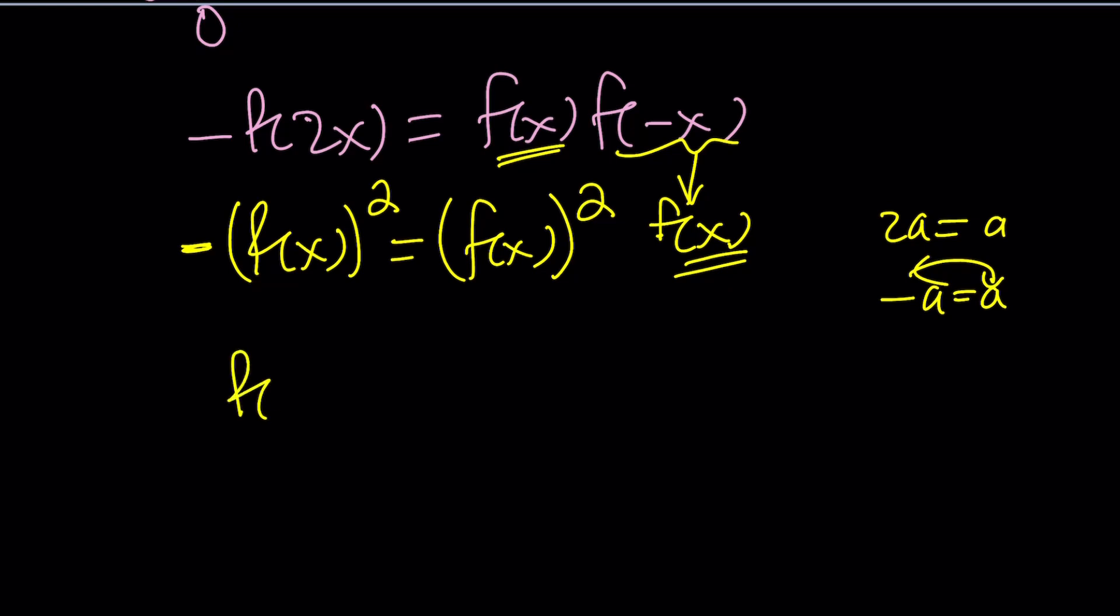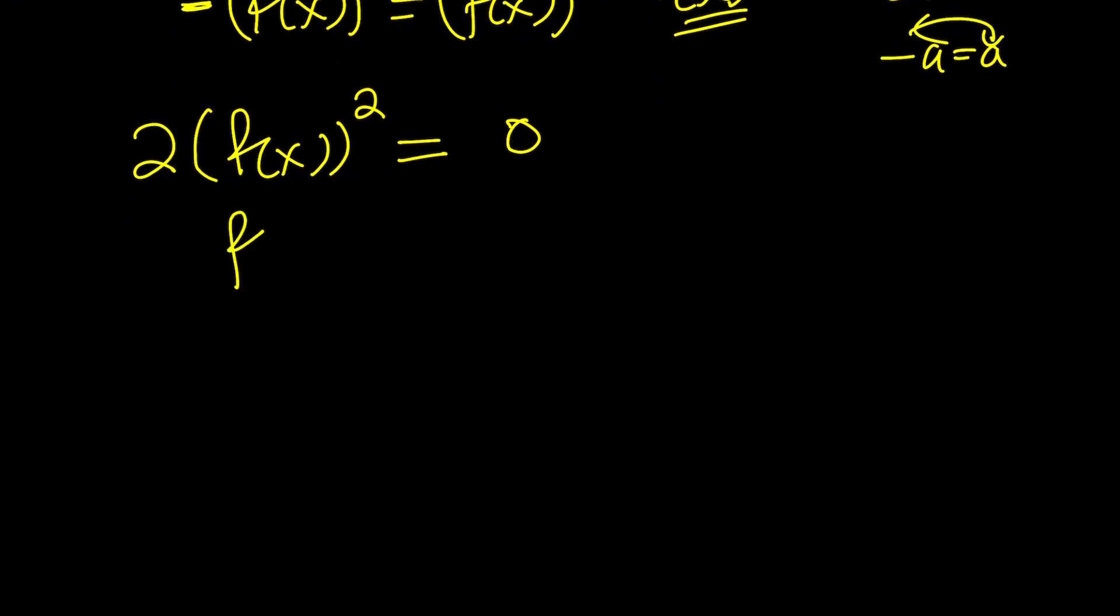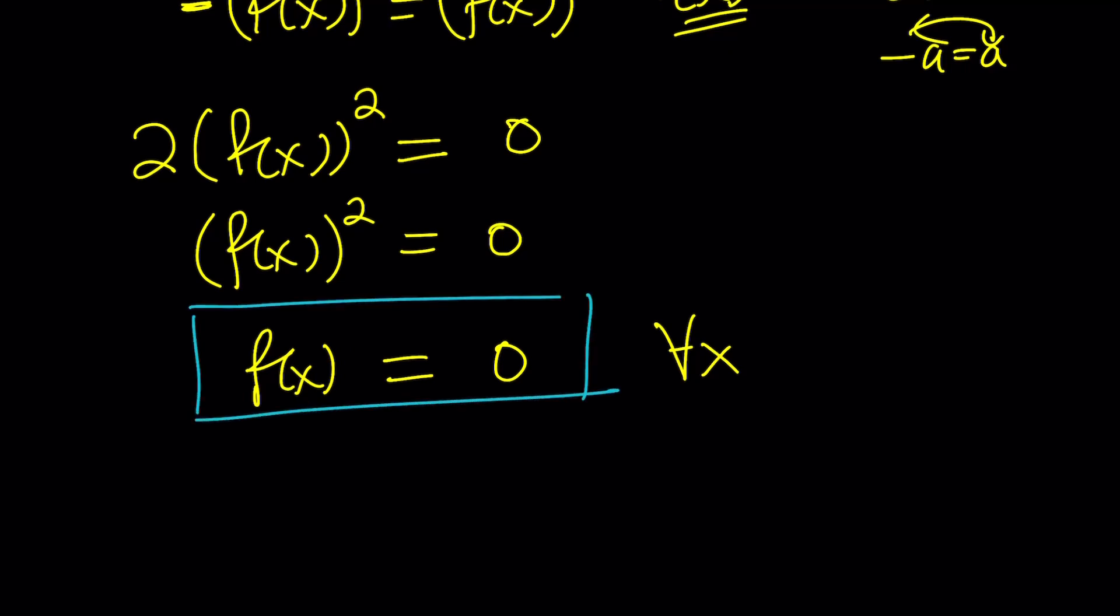If you put everything on the same side, you get f of x squared times 2 equals 0, which implies that f of x squared is 0. And again, we kind of come back to step number 1. What number squared is 0? The answer is 0. So f of x equals 0 from here. But this is true for all x values that are in the domain, which means it's a general statement, which means our function is identically 0.